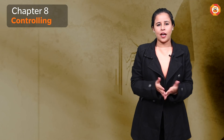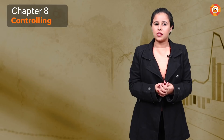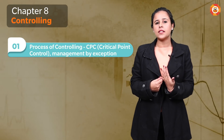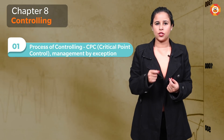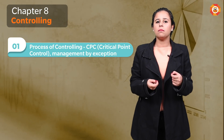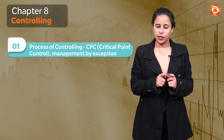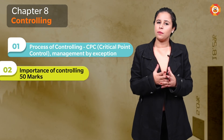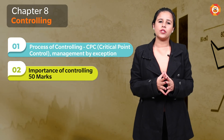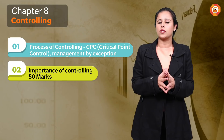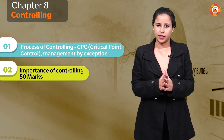Chapter 8 is Controlling — a very small chapter. You need to know the process of controlling. Also, understand the difference between CPC (critical point control) and management by exception. Second, the importance of controlling also needs to be covered. So two topics: the process of controlling and the importance of controlling. This was all from your Part One book.